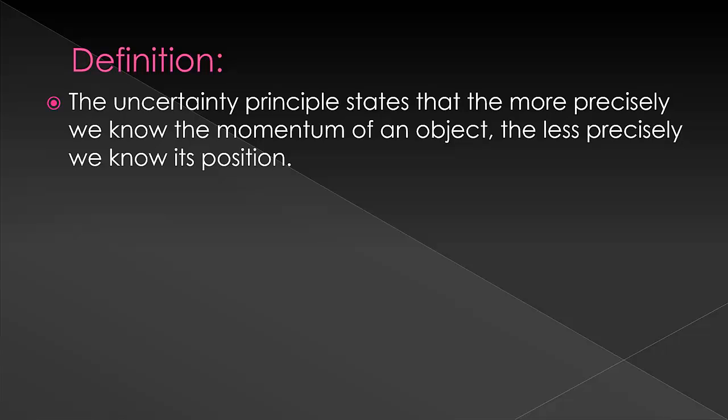So in other words, if we knew exactly where an object was, we would have no idea how fast it was going. Or, if we knew the exact momentum of an object, we would have no clue where it was.